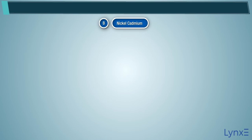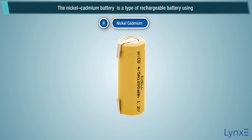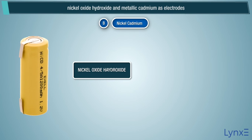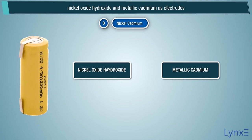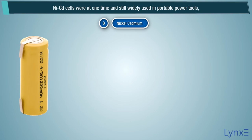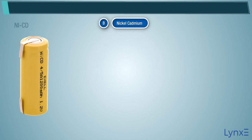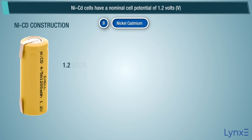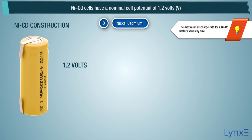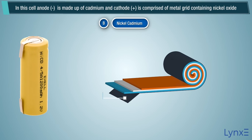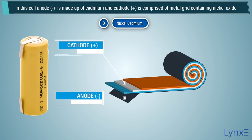Nickel Cadmium (NiCd) battery. The nickel cadmium battery is a type of rechargeable battery using nickel oxide hydroxide and metallic cadmium as electrodes. NiCd cells were at one time and still are widely used in portable power tools, photography equipment, flashlights, and emergency lighting. NiCd cells have a nominal cell potential of 1.2 volts. In this cell, the anode (negative) is made up of cadmium, and the cathode (positive) is comprised of a metal grid containing nickel oxide.